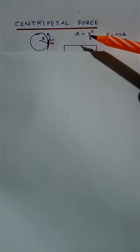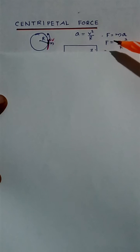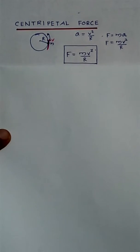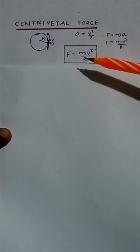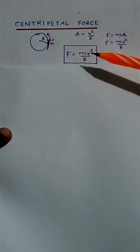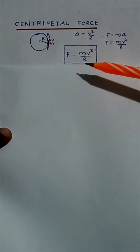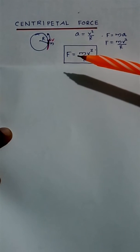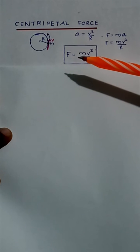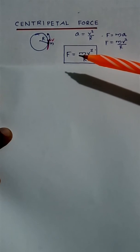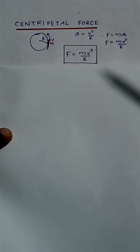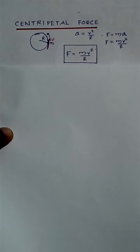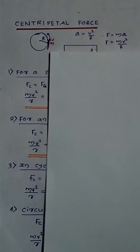Since F = ma, the body will experience a force F = mv²/r. So for a body moving through a circular path, if its mass is m, velocity is v, and radius is r, it will have a force called centripetal force, or center-seeking force, equal to mv²/r. Some questions may be asked related to this topic.